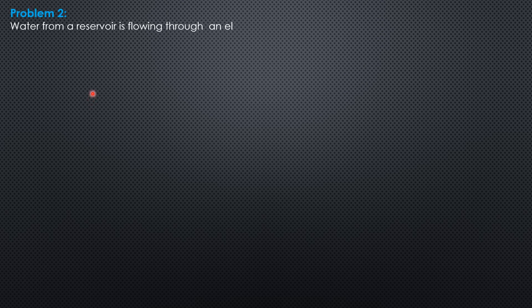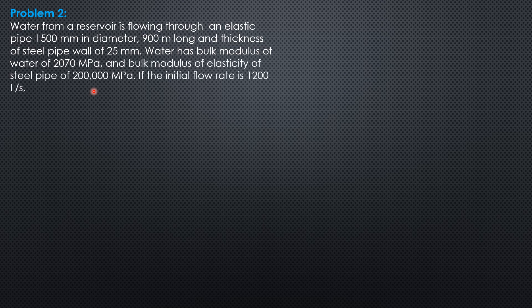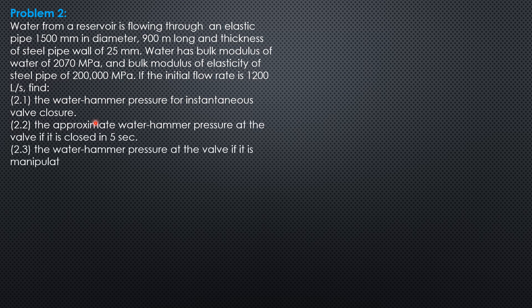Water from a reservoir is flowing through an elastic pipe 1,500 mm in diameter, 900 meters long, with a steel pipe wall thickness of 25 mm. The bulk modulus of water is 2,070 MPa and the bulk modulus of elasticity of the steel pipe is 200,000 MPa. The initial flow rate is 1,200 liters per second. Find the water hammer pressure for instantaneous valve closure.